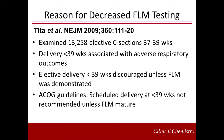Why is FLM testing decreasing in the United States? One likely answer is a decrease in elective delivery. An interesting study from 2009 examined 13,258 elective C-sections between 37 and 39 weeks of gestation. They found that infants born at 37 or 38 weeks, as compared to infants born at 39 weeks, had more poor outcomes, including adverse respiratory outcomes, the need for mechanical ventilation, newborn sepsis, hypoglycemia, admissions to the NICU, and hospitalization for more than five days. These findings support recommendations to delay elective delivery until at least 39 weeks of gestation.